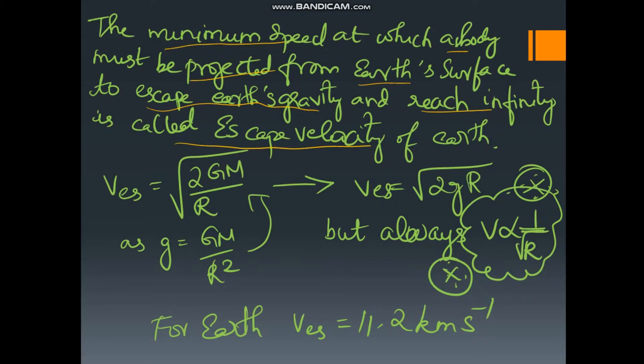So what does escape velocity mean? It is the velocity at which an object must be projected from the Earth so that it escapes the Earth's gravity and reaches an infinite point in space.